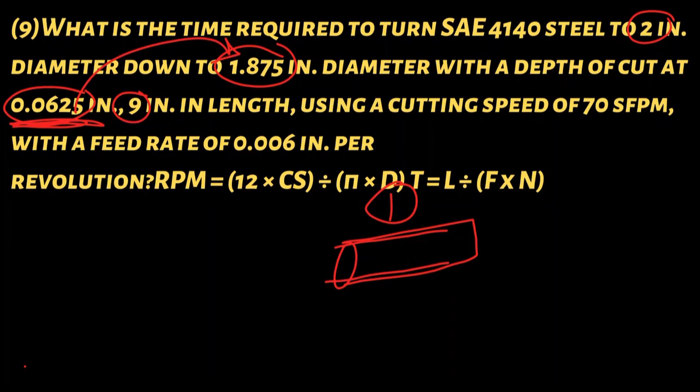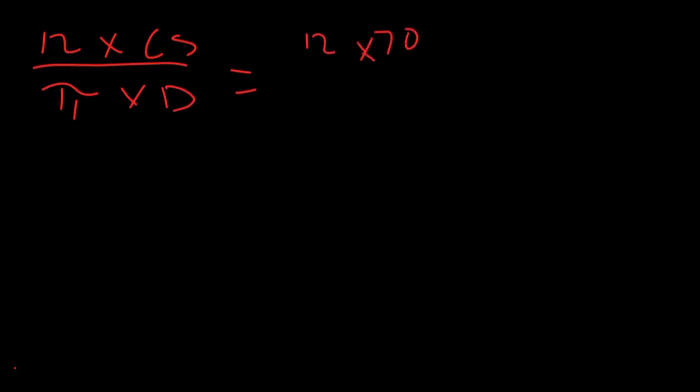Let's take a look. You have RPM equals 12 times CS divided by pi times D. So that equals 12 times 70 over 3.14, which is pi, times 2.